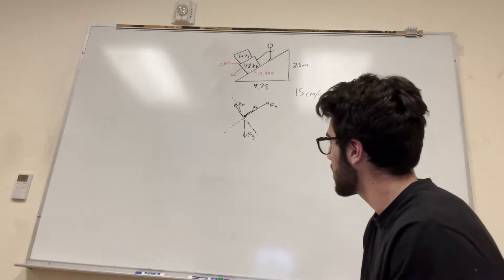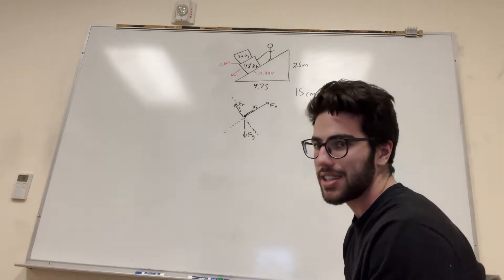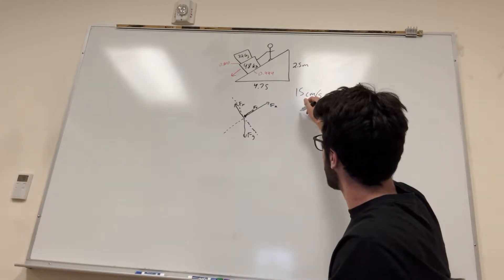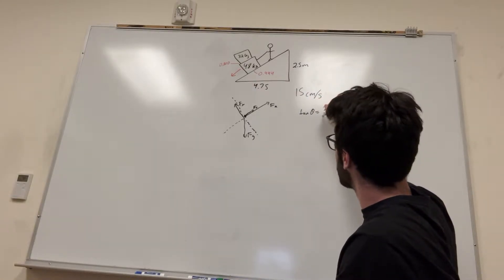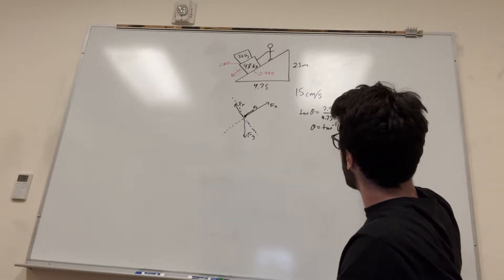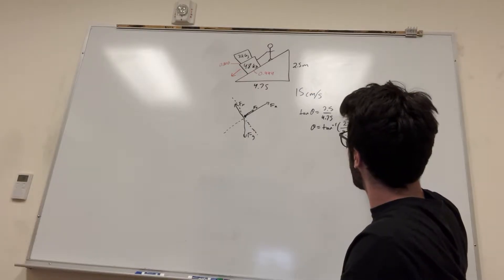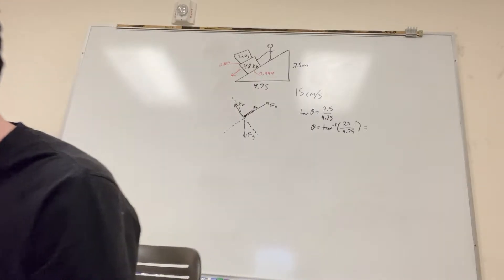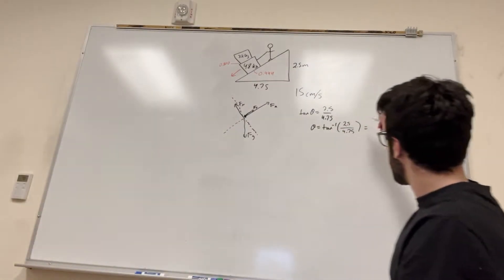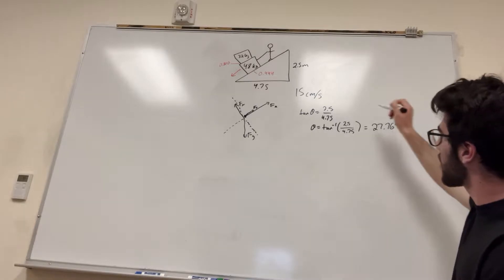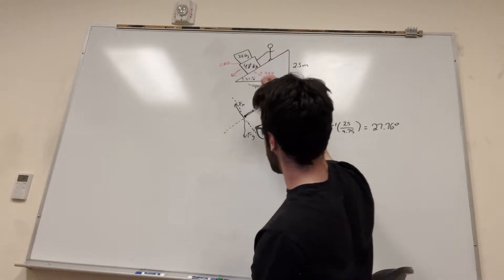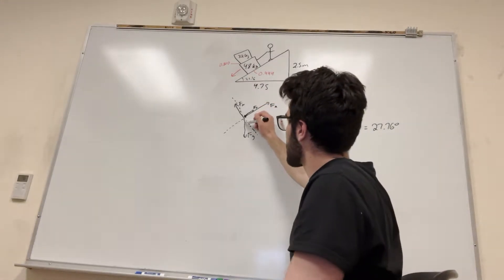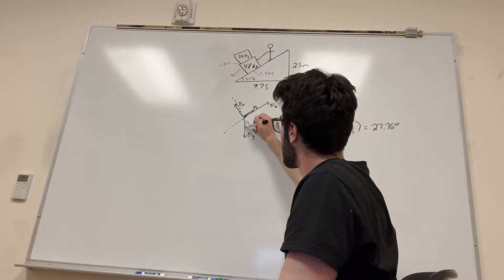We need to know the angle. Using tangent of theta equals opposite over adjacent: 2.5 over 4.75. So theta equals the inverse tangent of 2.5 over 4.75, which equals 27.76 degrees. And because of triangle geometry, that same angle of 27.76 degrees appears at the relevant corner.